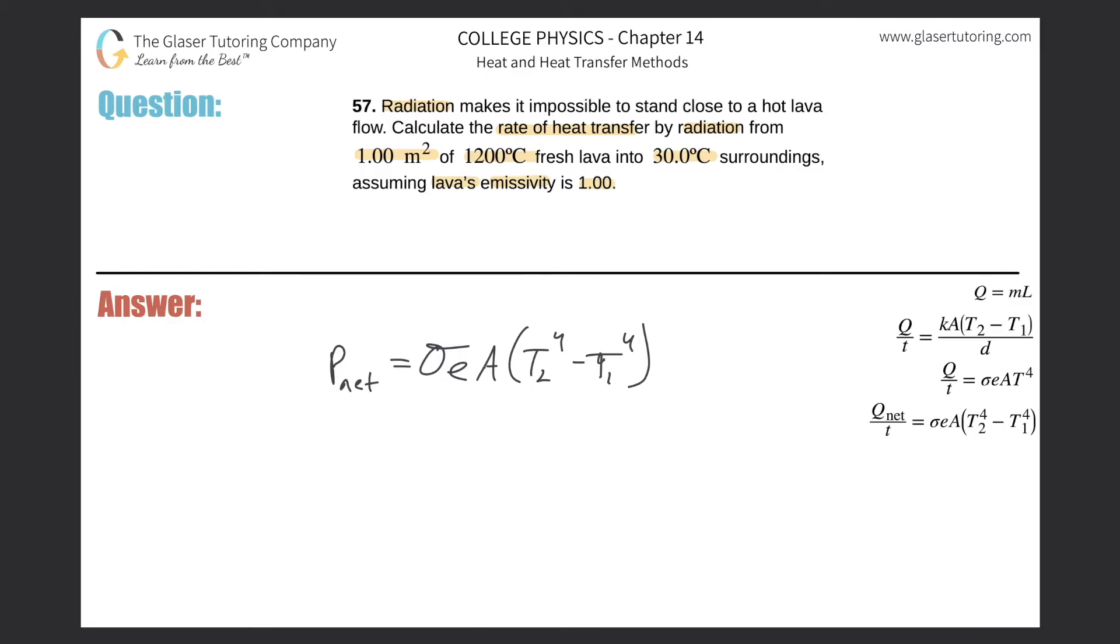So the net is going to be the Stefan-Boltzmann constant, that's 5.67 × 10⁻⁸. The emissivity they said of the lava is 1.